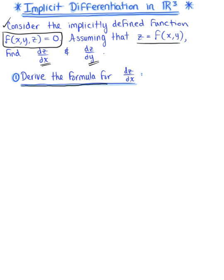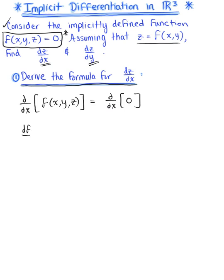The first thing we want to do is derive the formula for the derivative of z with respect to x. We're going to take our implicitly defined function and differentiate with respect to x using the chain rule. Applying the chain rule, we have the partial derivative of F with respect to x multiplied by dx/dx, plus the partial derivative of F with respect to y multiplied by dy/dx, plus the partial derivative of F with respect to z multiplied by dz/dx, and the derivative of 0 is just 0.